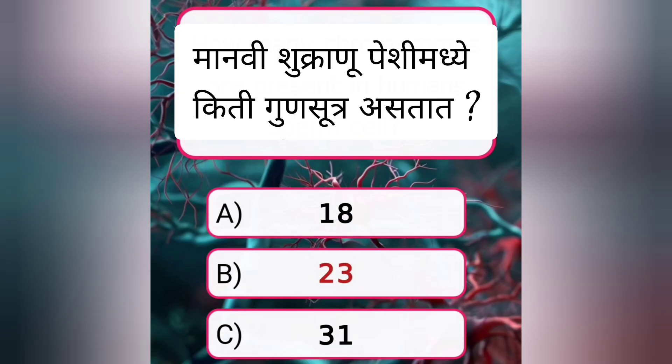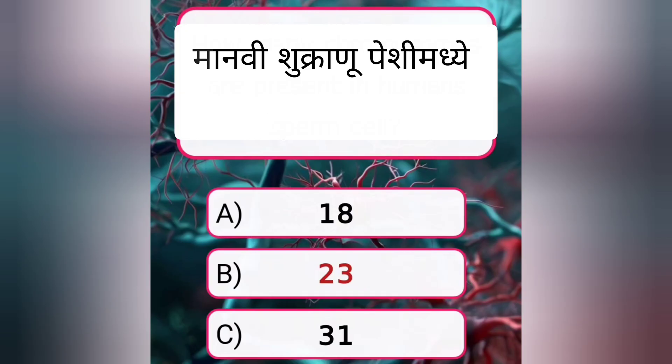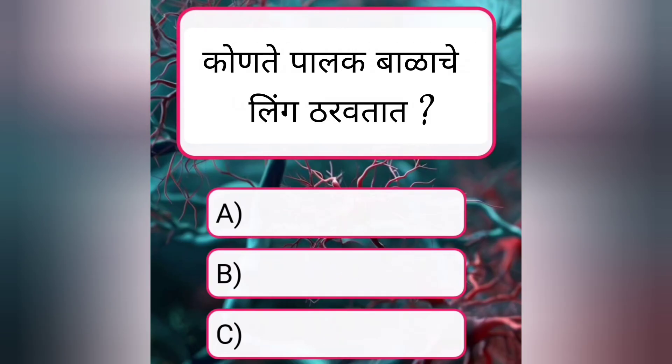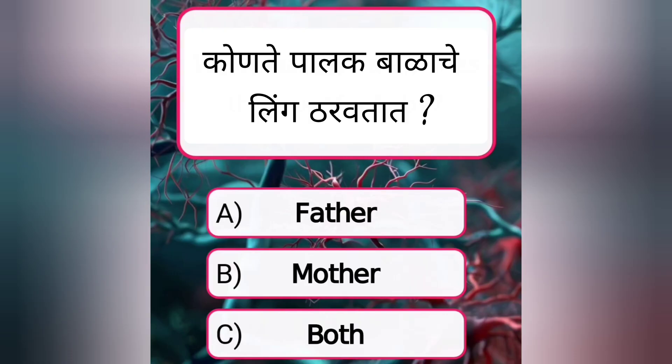How many chromosomes are present in a human sperm cell? Answer B. 23.